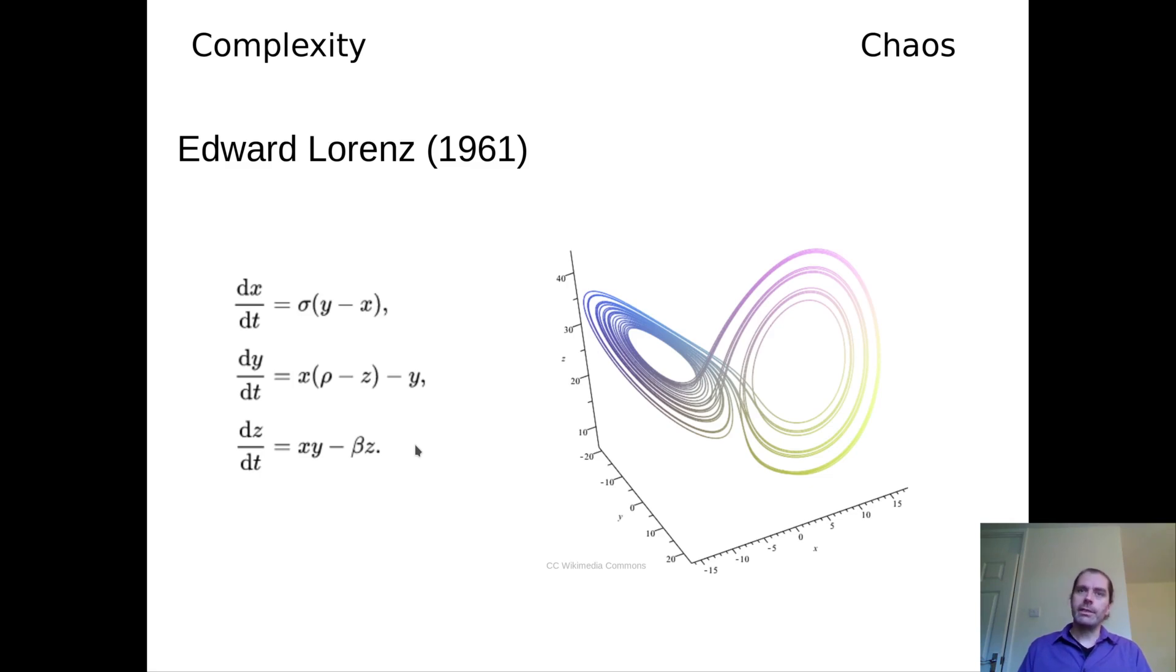The reason for that, he found out later, was that the printout only showed three significant digits, whereas the computer internally calculated with six significant digits. And that tiny difference was sufficient to produce entirely different dynamics in the rerun of the model.